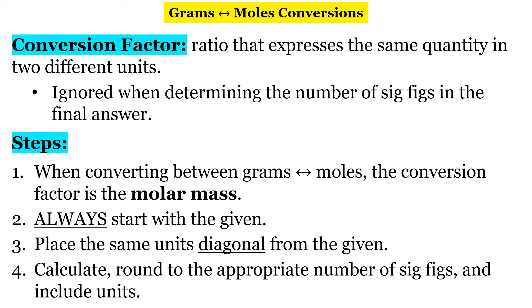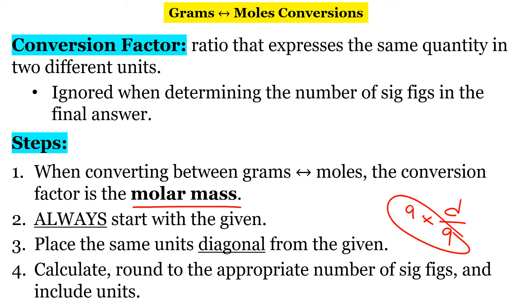When converting between grams and moles, the conversion factor is the molar mass. We always start with the given — in the first two examples I started with 536 quarters, then five dollars. We always place the same units diagonal from the given so they cancel out. Finally, calculate, round to the appropriate number of sig figs, and include units.